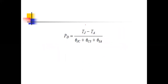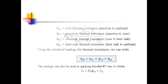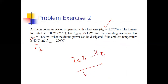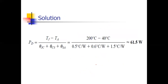The formula is: Pd = (Tj − Ta) / (θjc + θcs + θsa). Tj is 200°C and Ta is 40°C. So: Pd = (200 − 40) / (0.5 + 0.6 + 1.5) = 160 / 2.6 ≈ 61.5 watts. The values are θjc = 0.5, θcs = 0.6, θsa = 1.5, giving a denominator of 2.6.